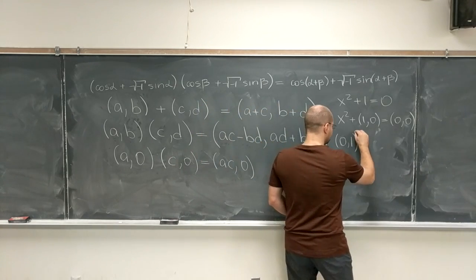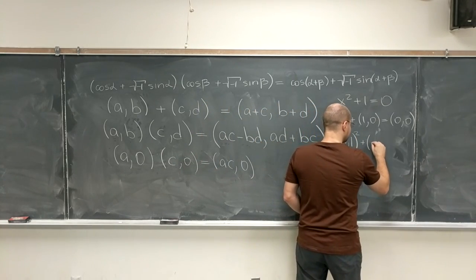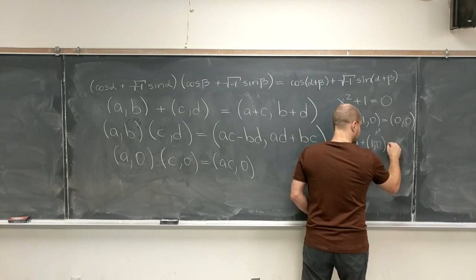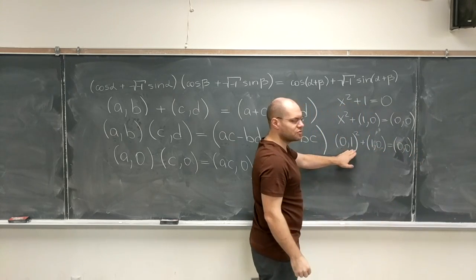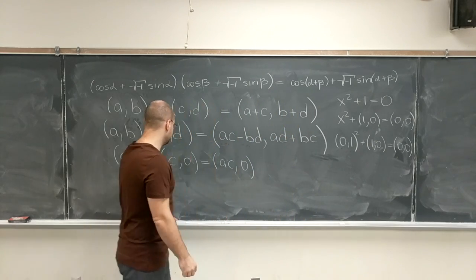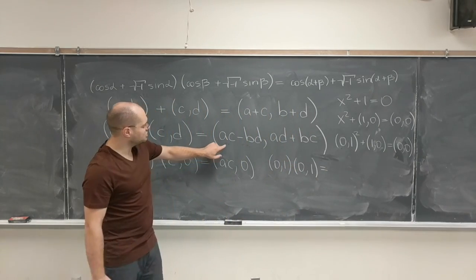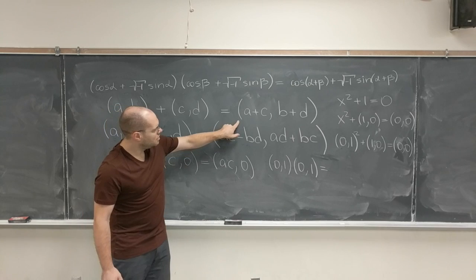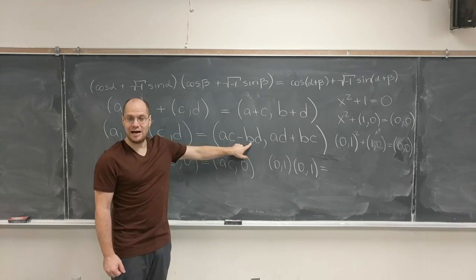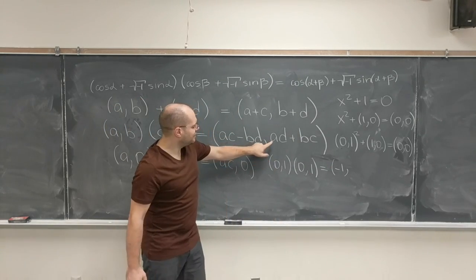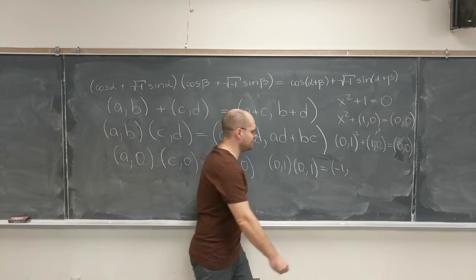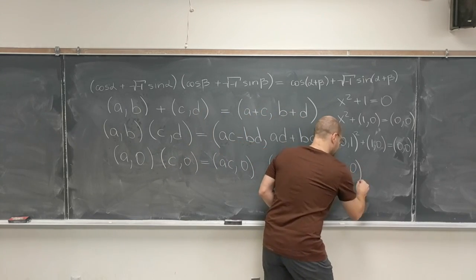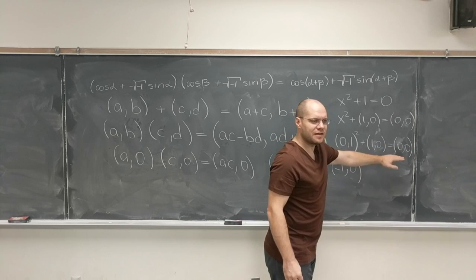Because (0, 1) squared—let's see this. (0, 1) squared, according to this definition, equals (0 minus 1, 0 plus 0) equals (-1, 0). And so you see that it works.